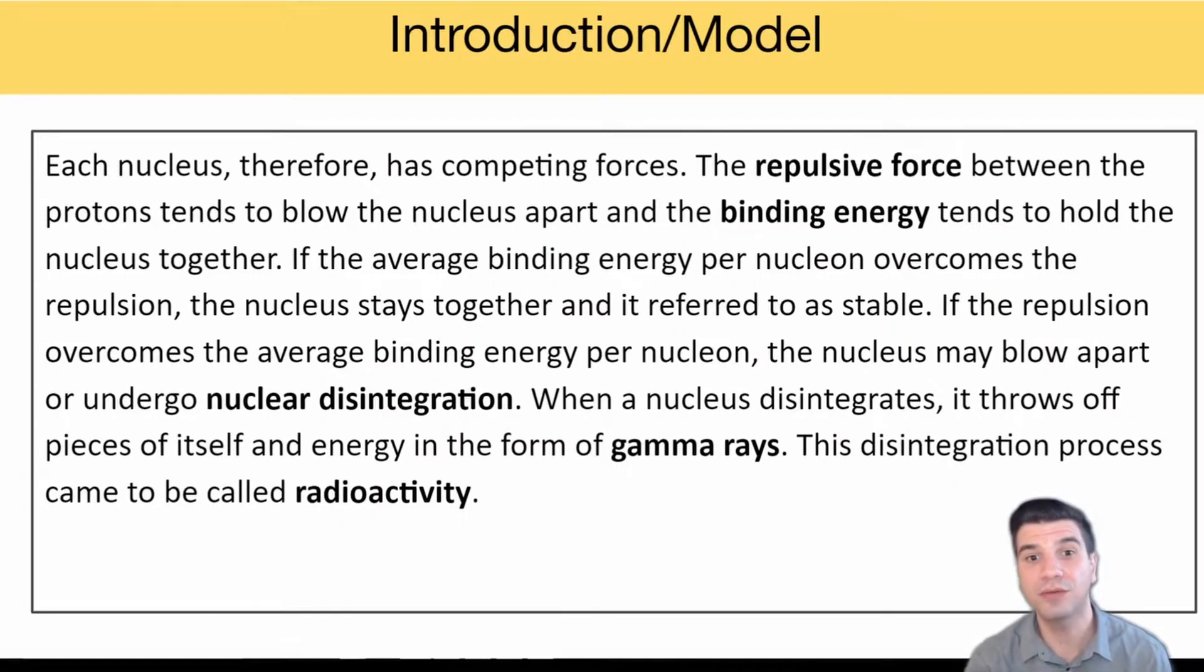Really it's a battle between two competing forces. You've got the repulsive force with the protons—protons are both positive so they're trying to get away from each other. Then we have the binding energy trying to hold everything together. If the average binding energy per nucleon overcomes that repulsion, then the nucleus can stay together and we call that a stable element. If the repulsion overcomes the average binding energy per nucleon, then the nucleus will blow itself apart. We call that nuclear disintegration, and when a nucleus disintegrates it throws off little pieces of itself and energy in the form of gamma rays. This disintegration process is what we refer to when we say radioactivity.